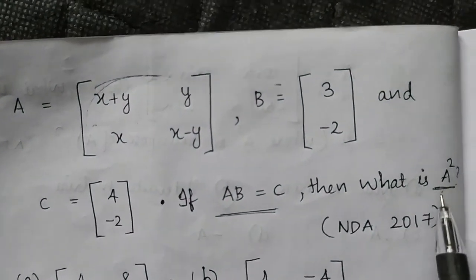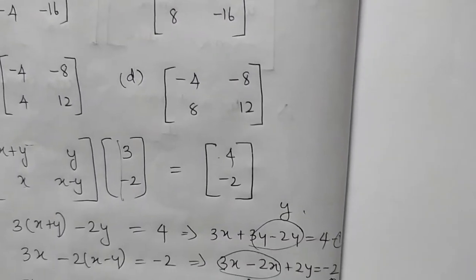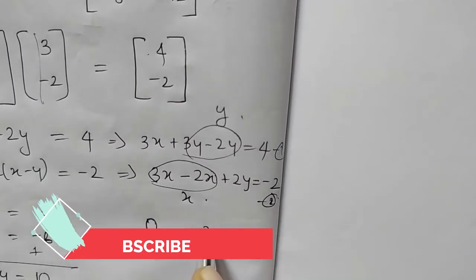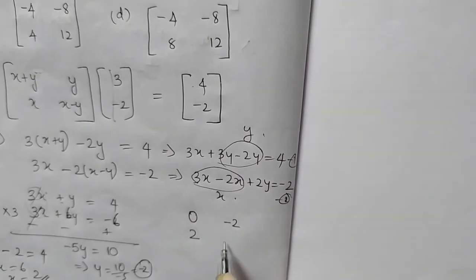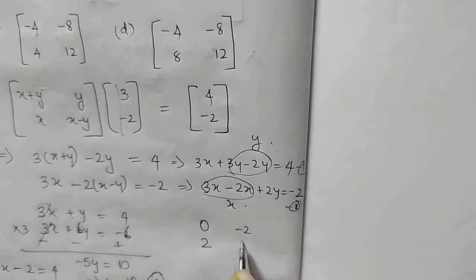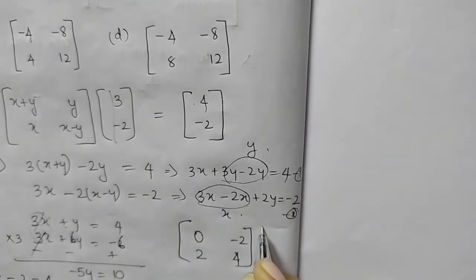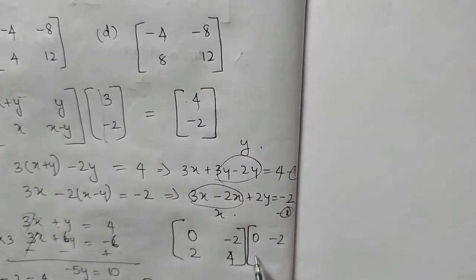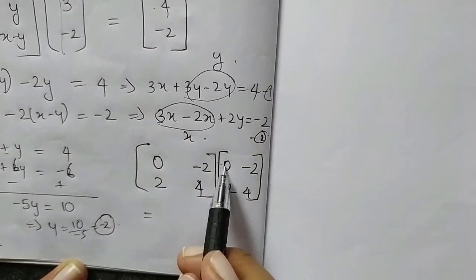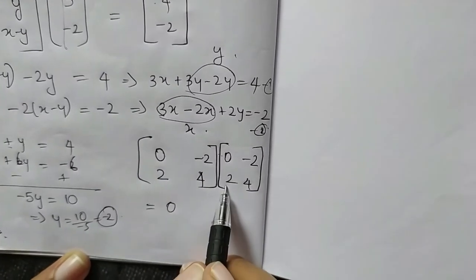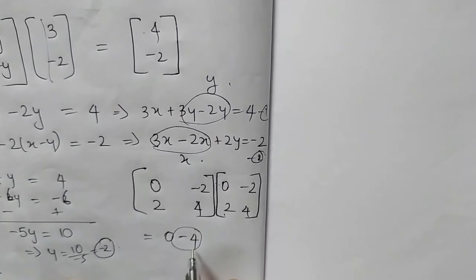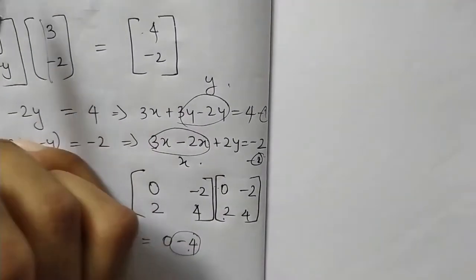Now we compute A squared. With x equals 2 and y equals minus 2, x minus y equals 2 minus (minus 2) equals 4. Multiplying: 0 times 0 equals 0, minus 2 gives 2, and 2 gives minus 4. The first element is minus 4.